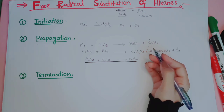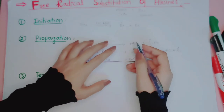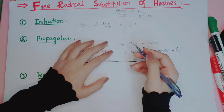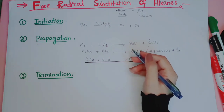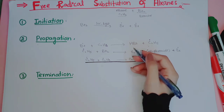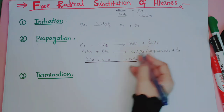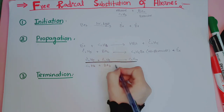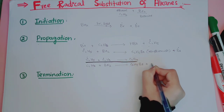Looking at the overall propagation reaction, C₂H₆ (ethane) and Br₂ (bromine) reacted with each other and gave us ethyl bromide (C₂H₅Br) plus hydrogen bromide (HBr). The bromine molecule keeps brominating the alkanes, and to stop this chain reaction the termination step comes next.